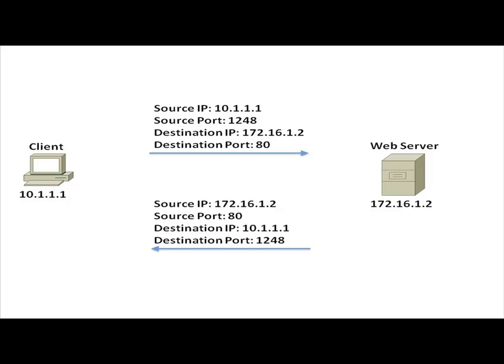We have a client wanting to communicate with a web server. The client has a source IP address, we'll say of 10.1.1.1, and we're sending a packet with a destination IP address of 172.16.1.2. That's the IP address of the web server. If we were to peer inside of the header, we would see not only source and destination IP address information, we would see source and destination port number information.